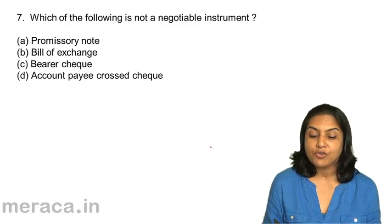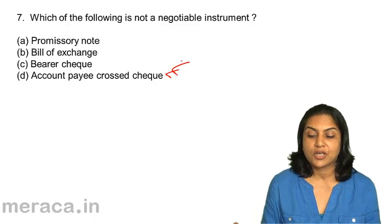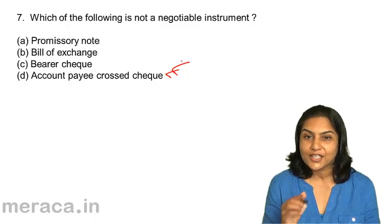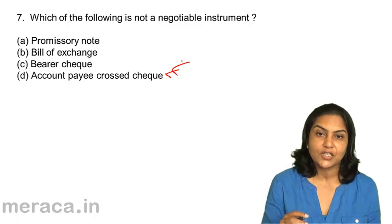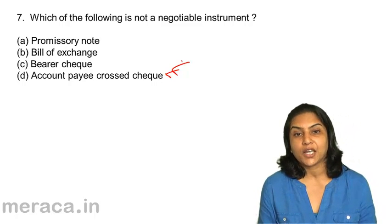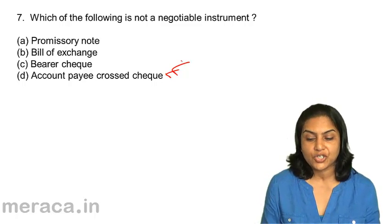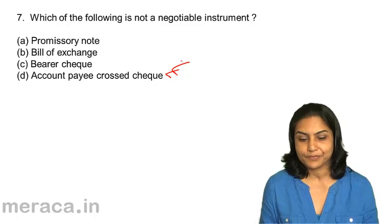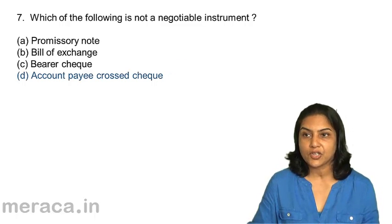An account payee crossed check is not a negotiable instrument, because the check has been crossed and marked account payee — so the money can only be transferred to the account of that particular person. Therefore, the correct answer is an account payee crossed check.